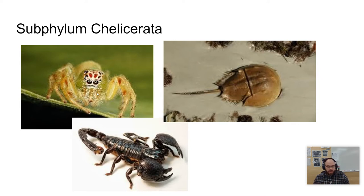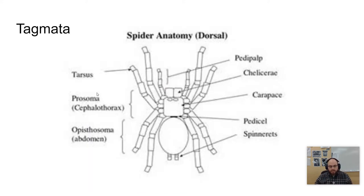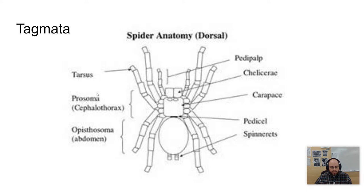Chelicerates include horseshoe crabs, spiders, ticks, mites, scorpions, and sea spiders. They have two very clear tagmata: a cephalothorax, which for this group is called the prosoma, and the abdomen, which is called the opisthosoma. Six pairs of appendages are found on the cephalothorax.